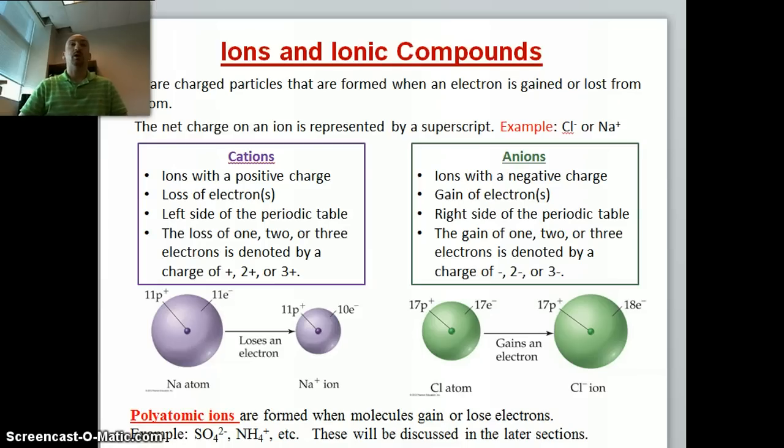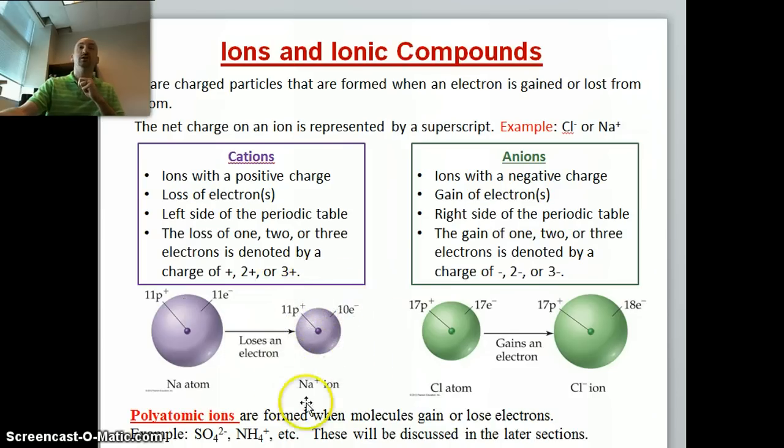Now we can turn to ions and ionic compounds. Ions are charged particles that are formed when an electron is either gained or lost from the atom. This results in a net charge on the atom and is represented with a superscript. We either put a plus or a minus, and they're called either cations or anions. A cation has a positive charge due to the loss of an electron. These are usually on the left side of the periodic table. For example, here we can look at the sodium atom, which can lose an electron, which results in 11 positively charged protons and only 10 negatively charged electrons, giving it an overall plus charge, so we have the Na+ cation.